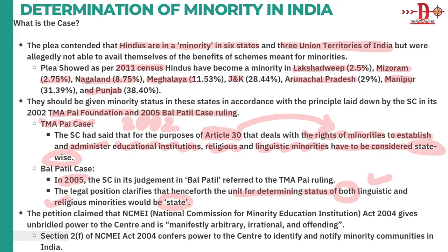Then comes the petition challenging the National Commission for Minority Education Institution Act 2004. The petitioners claimed this gave unbridled and arbitrary power to the centre, as Section 2, Clause 4 of this act gave the centre the power to identify and notify minority communities, whereas TMA Pai and Bal Patil cases had given that power to the states.